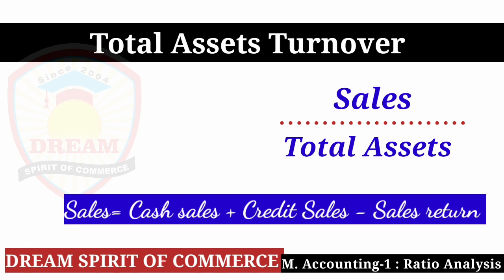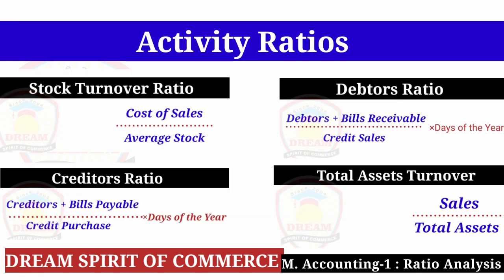Next, Total Assets Turnover: Total Assets Turnover equals Sales divided by Total Assets. Here Sales means Cash Sales plus Credit Sales minus Sales Return. Friends, activity ratios basically have four ratios: first Stock Turnover Ratio (Cost of Sales / Average Stock), second Debtors Ratio (Debtors + Bills Receivable / Credit Sales × Days), third Creditors Ratio (Creditors + Bills Payable / Credit Sales × Days), and last Total Assets Turnover (Sales / Total Assets).